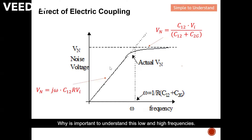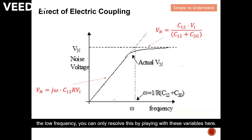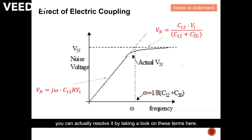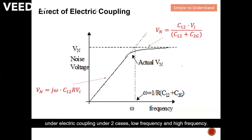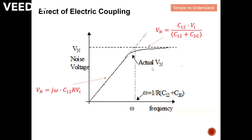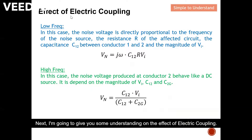It is important to understand this distinction. If you see noise coupled at low frequency, you can resolve the issue by adjusting the variables in the low-frequency term. Once you see noise coupling at high frequency, you can resolve it by looking at the terms in the high-frequency formula. This gives you guidance on how to resolve the issue under electric coupling in both cases.